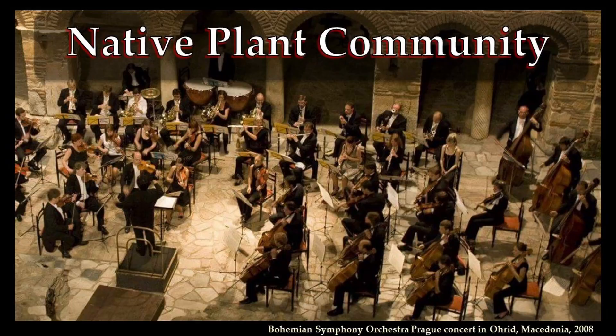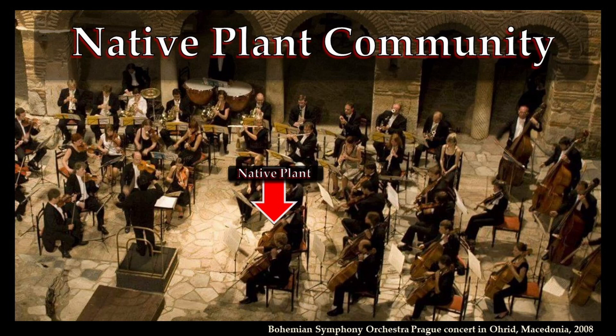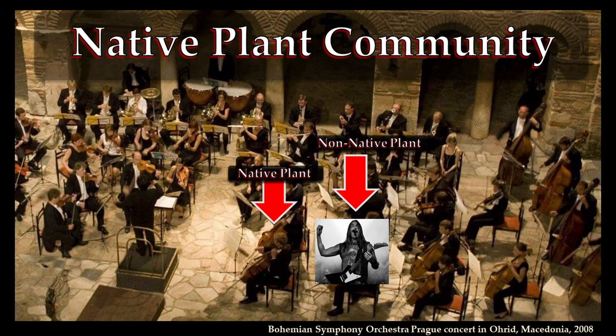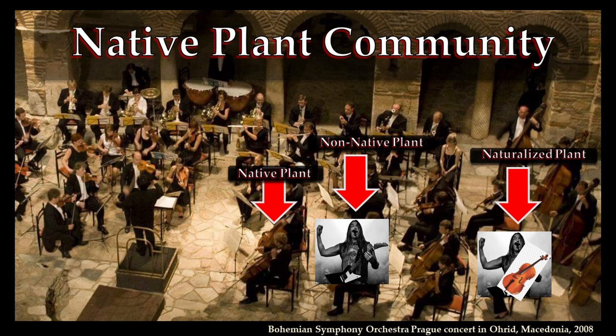In our orchestra analogy, a naturalized plant is like an electric guitar — which is non-native — that has put a cello cover over the instrument and is using the cello sheet music, playing that cello music on a covered-up electric guitar. At a quick glance, it kind of fits in, and sometimes when they're playing it even sounds okay. But at closer inspection, you begin to see: wait a minute, you're not from around here, are you?